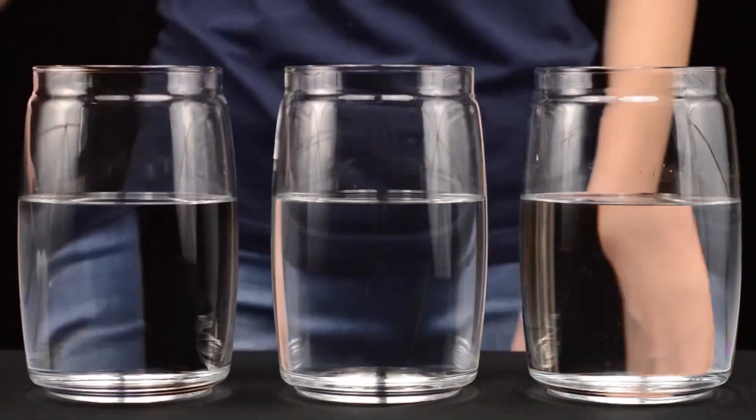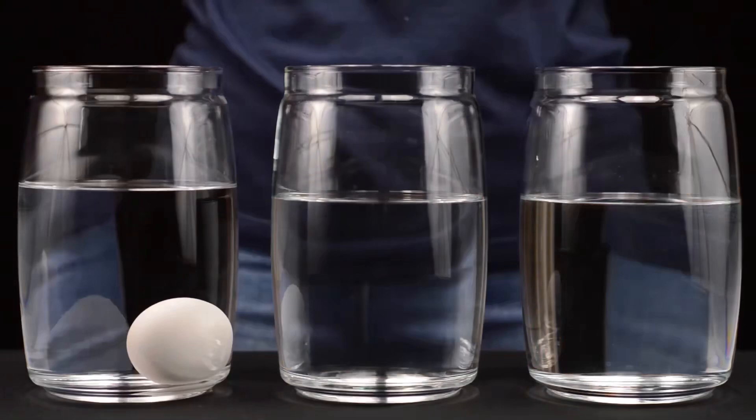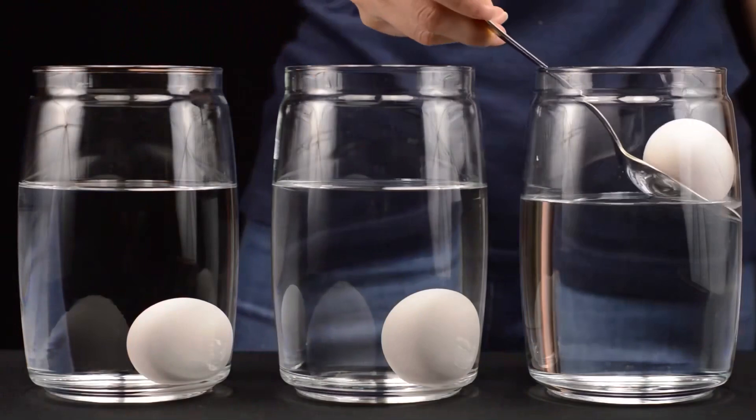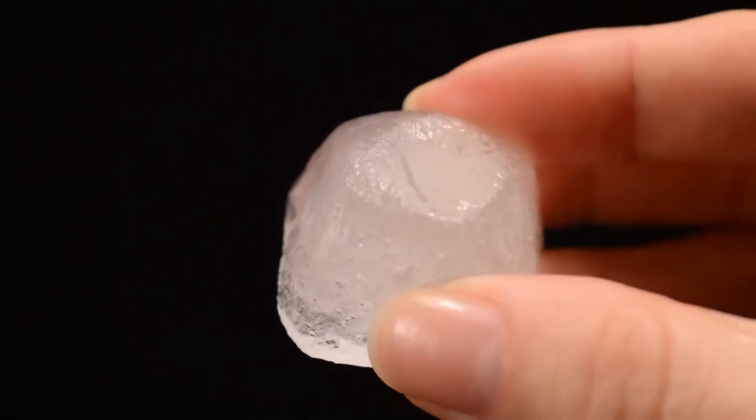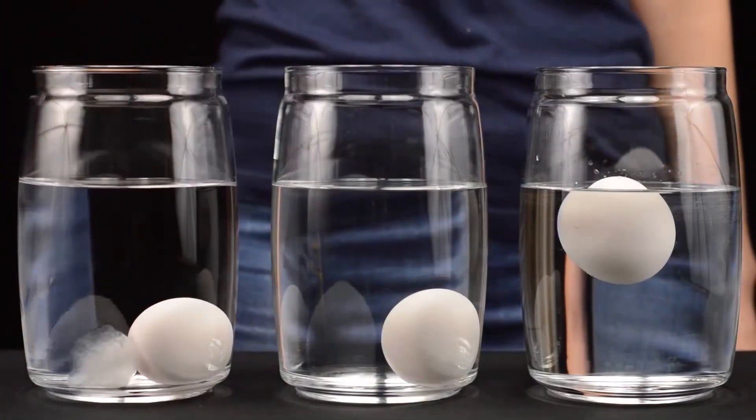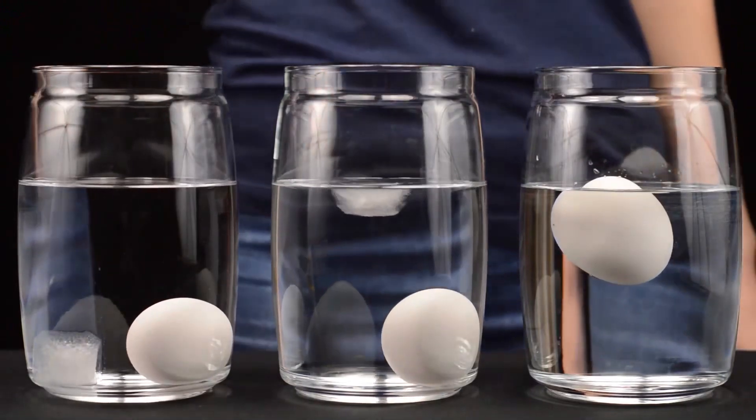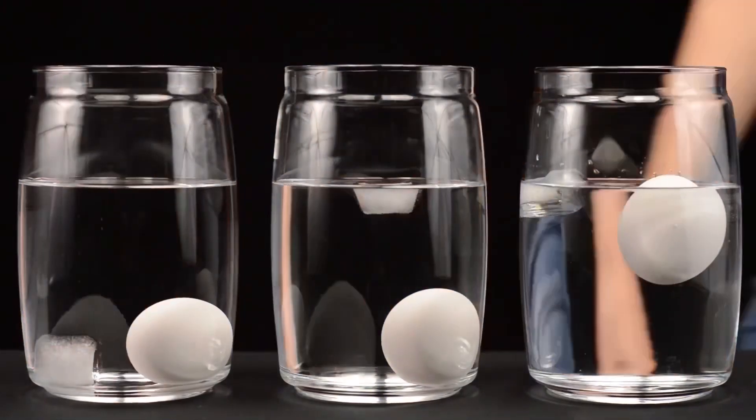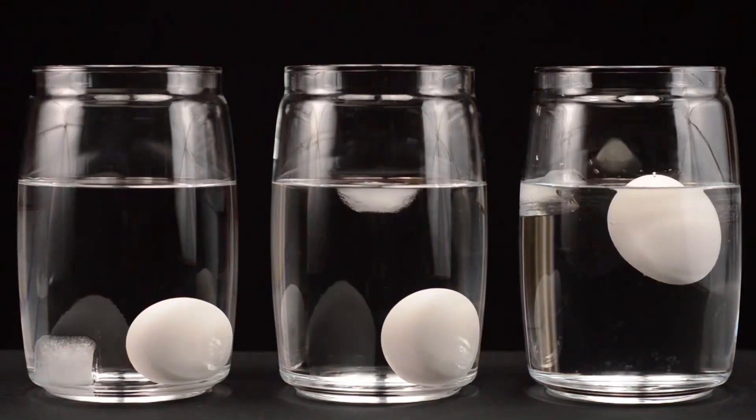Here we have three vessels with seemingly identical liquids. We gently lower raw egg into each one of them. Gently lower them along the wall. And now, let's add ice cubes here. In the first vessel, we have alcohol. Egg and ice drowned. In the second, there's fresh water. The ice has surface. And the egg's in the bottom. And in the third vessel, we have salt and water. There's ice and egg on the surface.